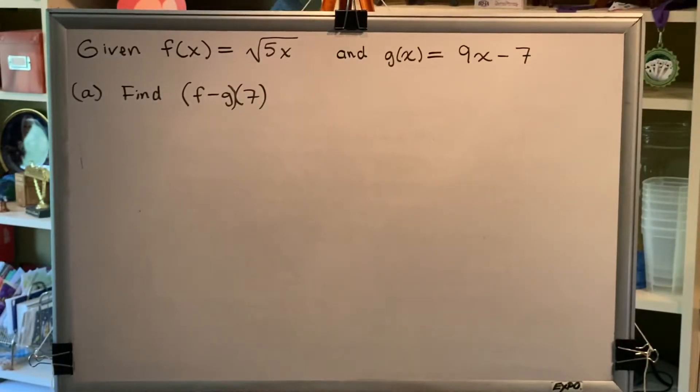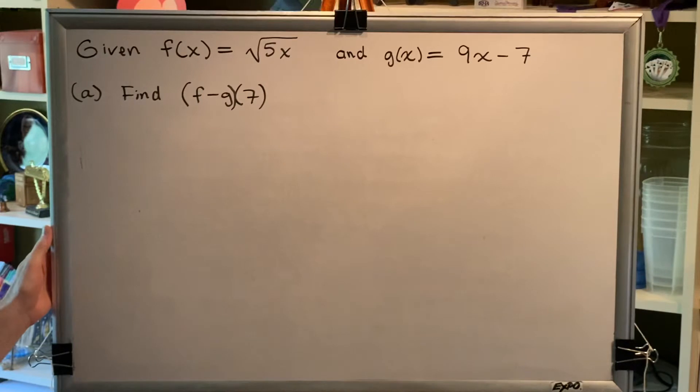The topic of this video is forming the sum, difference, product, and quotient of two functions. Let's look at a problem. Given f(x) equals the principal square root of 5x and g(x) equals 9x minus 7, find the following.